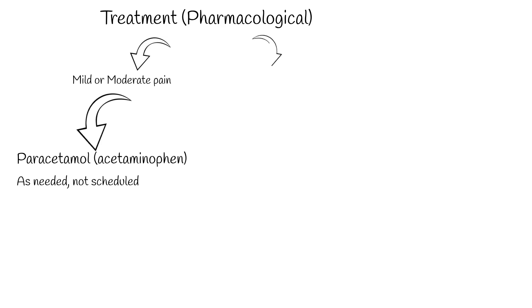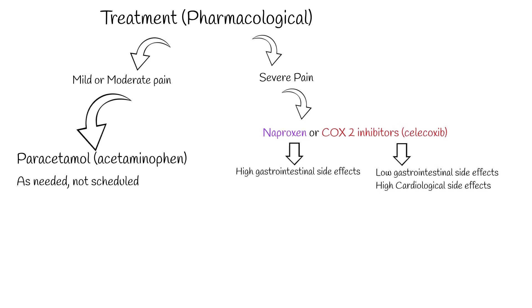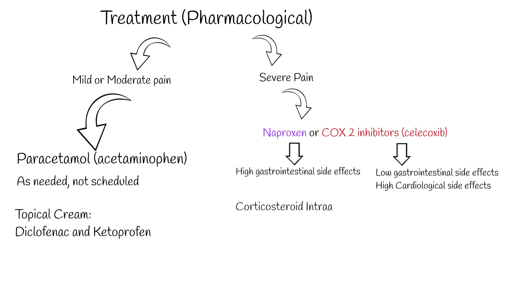For mild to moderate symptoms, the effectiveness of acetaminophen is similar to non-steroidal anti-inflammatory drugs such as naproxen, though for more severe symptoms, NSAIDs may be more effective. COX-2 selective inhibitors, such as celecoxib, are equally effective compared to non-selective NSAIDs and have lower rates of adverse gastrointestinal effects, but higher rates of cardiovascular disease such as myocardial infarction. Several NSAIDs are also available for topical use, including diclofenac and ketoprofen.